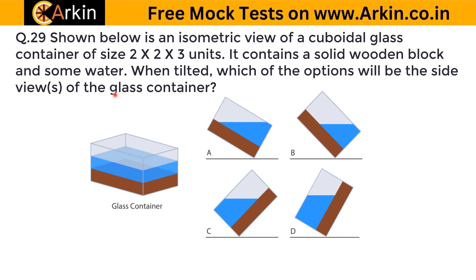Let's continue with the second part of MCQs of the 2022 UC paper. Questions 1 to 28 are already done — you can check that in the playlist. Now in this question, it says: this is an isometric view of a cuboidal glass container of size 2×2×3 units. So this width is 2, this height is 2, and this is 3 units.